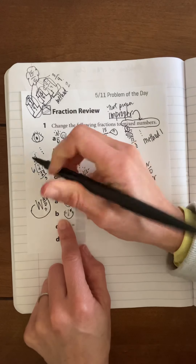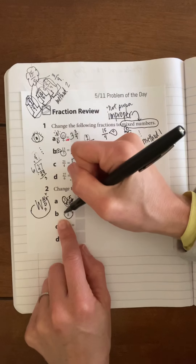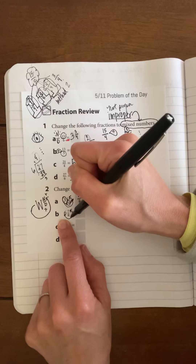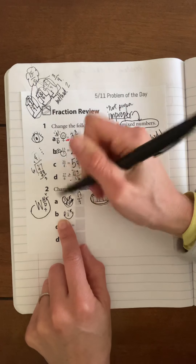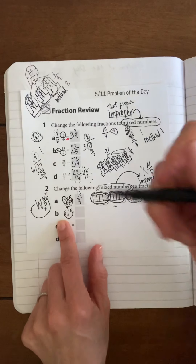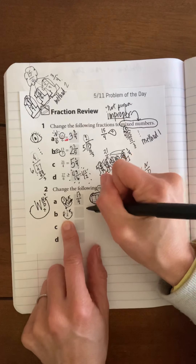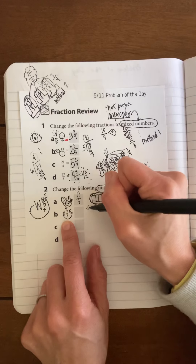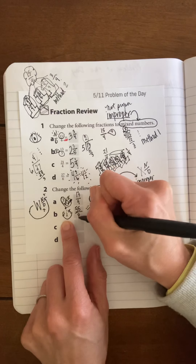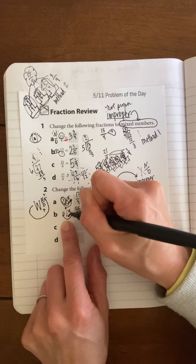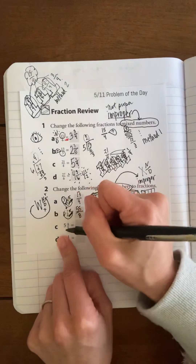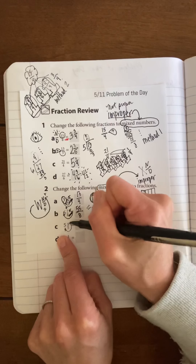Six and 7 eighths: six whole cut into eighths, so six times eight is 48. Then add seven — 48, 49, 50, 51, 52, 53, 54, 55. So the answer is 55 over eight. It's always cut into the same eighths.